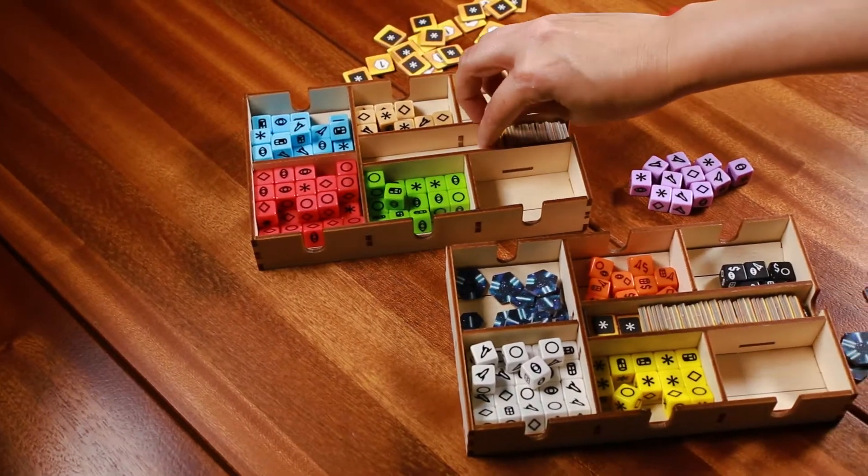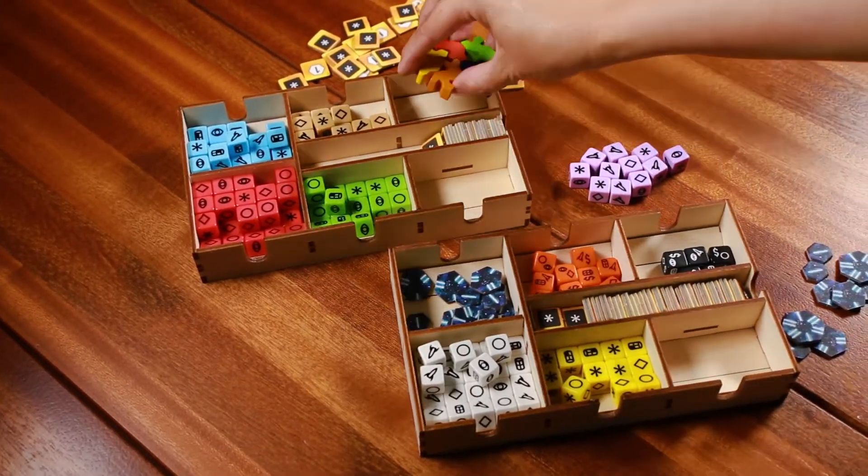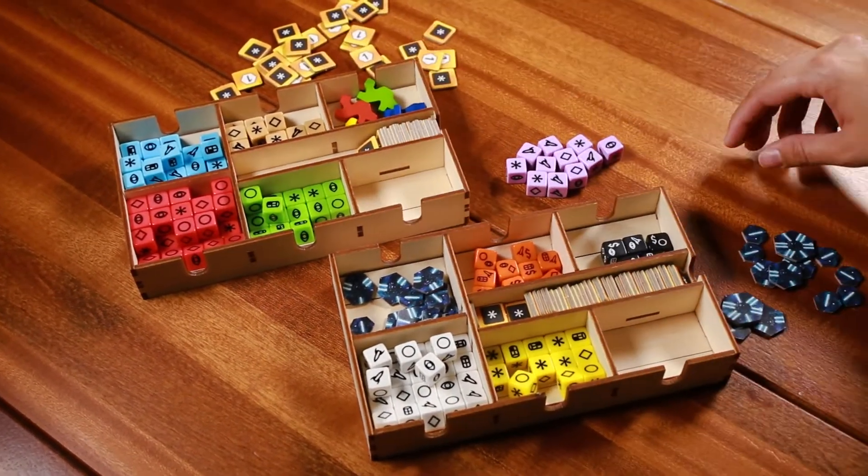There are two removable trays for the dice, victory tokens, talent counters, and credit markers to help with setup.